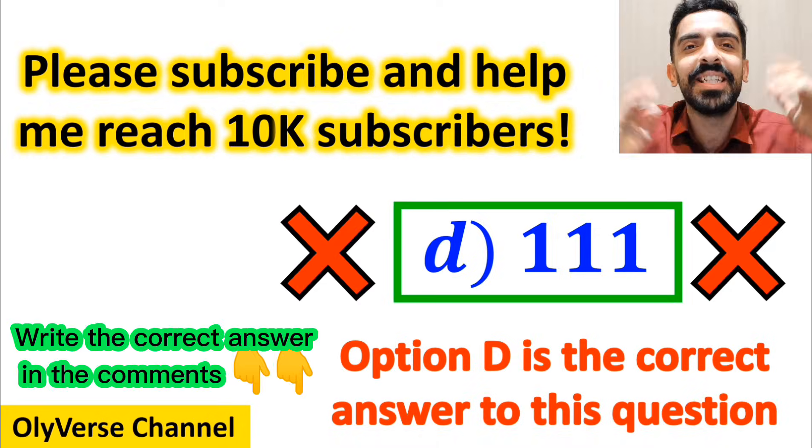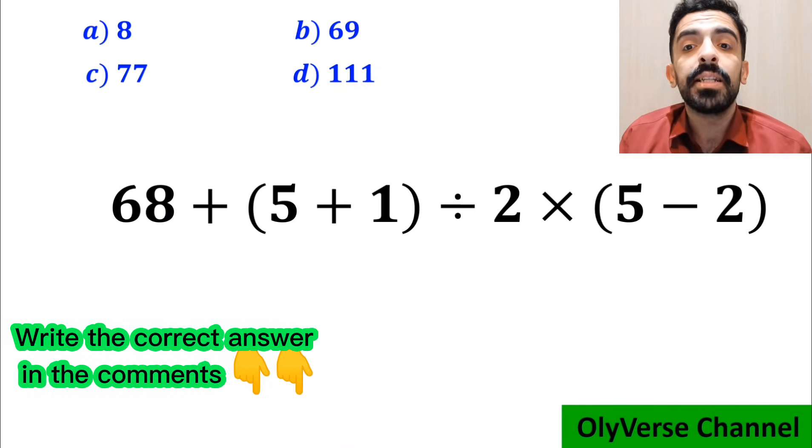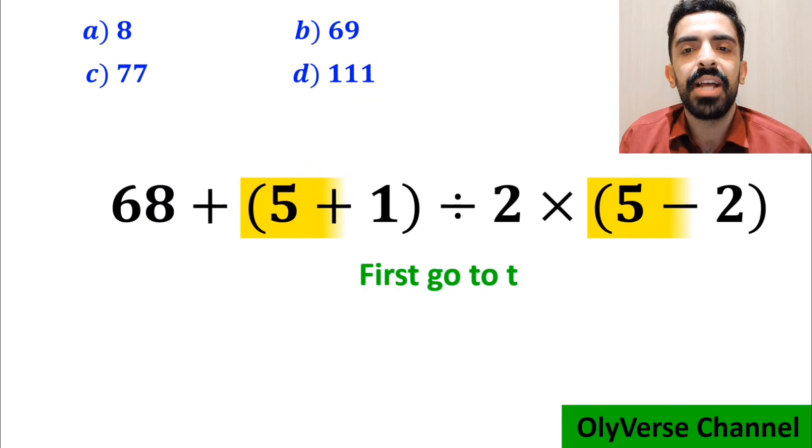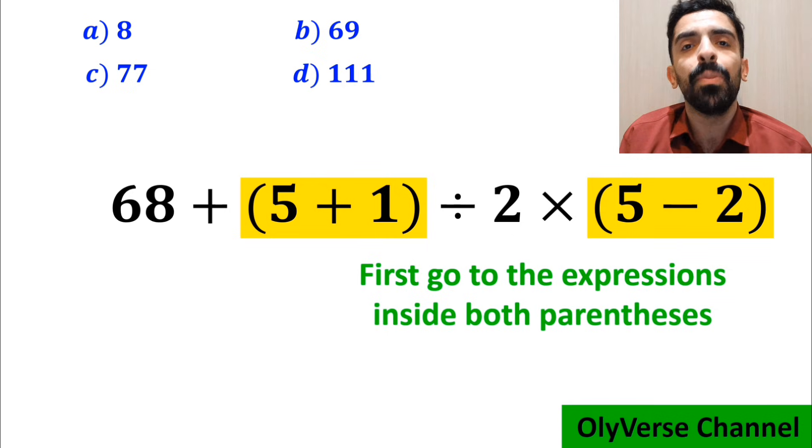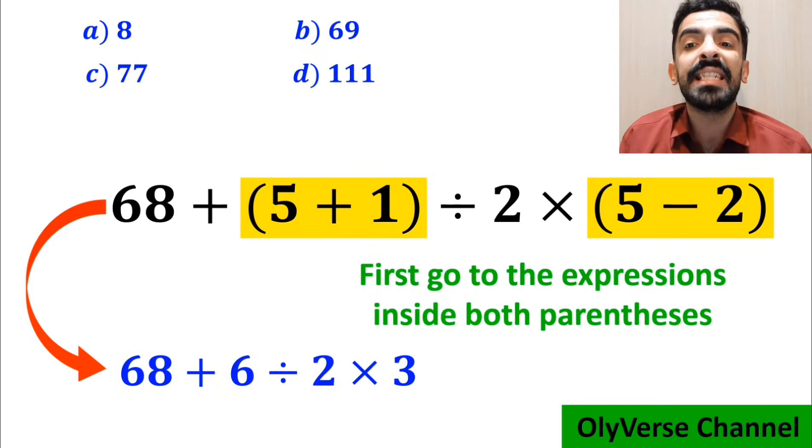However, that's definitely wrong. Some other people, when solving this question, first go to the expressions inside both parentheses and simplify to 68 + 6 ÷ 2 × 3.